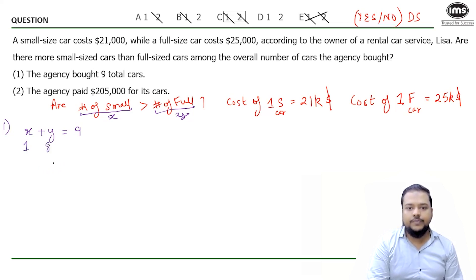For example, X could be 1, Y could be 8. Now the answer to my question, is X greater than Y? The answer is no. But I can flip the table. If I take number of small cars as 8 and number of full size cars as 1, still the total is 9. But now the answer to my question, are number of small size cars more than number of full size cars? The answer is yes now. So we are getting both answers, no and yes.